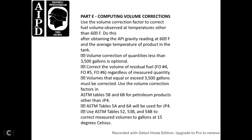Part E: Computing the volume correction. The volume correction factor for fuel volume is referenced to 60 degrees Fahrenheit. Obtain the API gravity reading at 60 degrees Fahrenheit and the temperature for the product in the tank volume. Correction is optional for quantities of less than 3,500 gallons and for residual fuel. Regardless, when the measured quantity equals or exceeds 3,500 gallons, volume correction factors from ASTM tables 5B and 6B must be used.